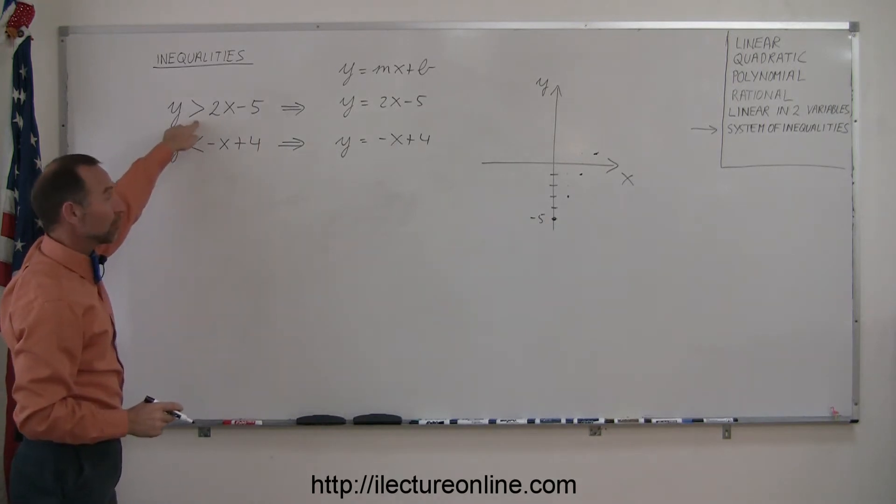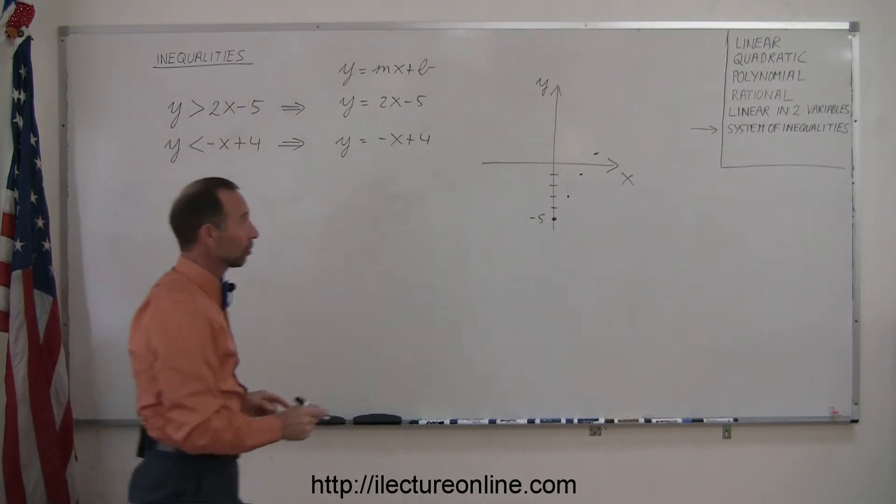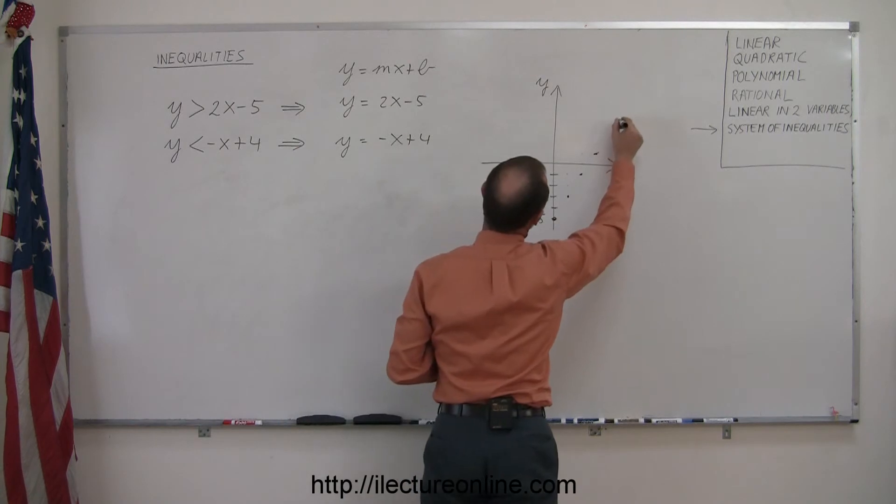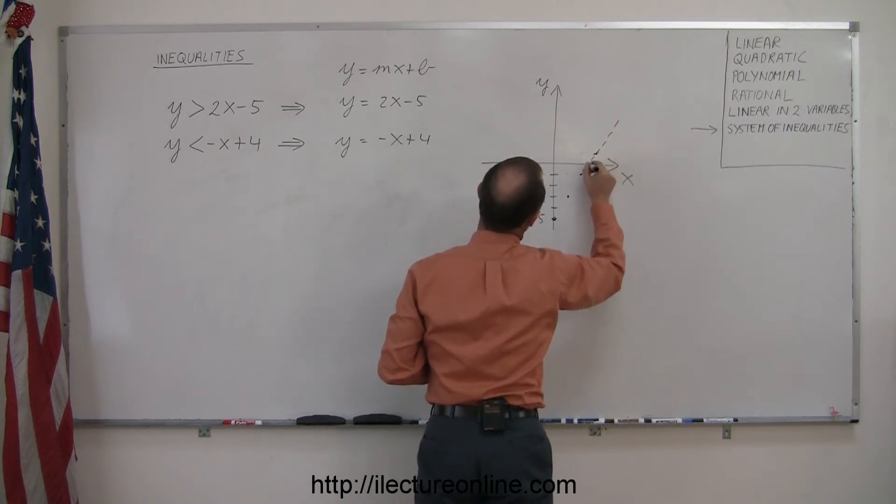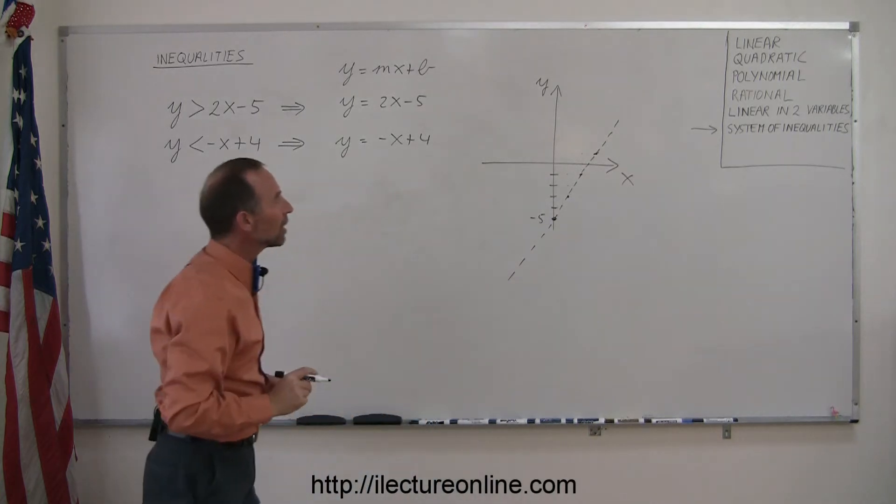Notice there's no equal sign there, so the actual line is not part of the solution. We draw a dashed line to indicate that. So the dashed line is the boundary.